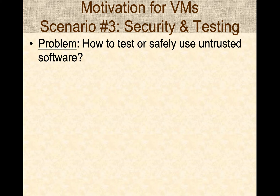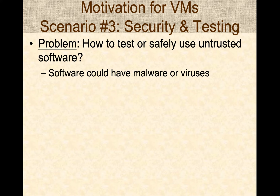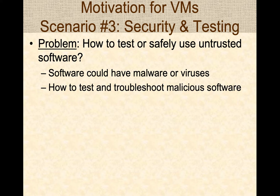The third motivation for using virtual machines is security and testing. The key problem is how to safely use untrusted software — programs you might download from the internet, or software used in high-security infrastructures like power plants or water distribution systems. The question is how to safely test complex software and operating systems for use in mission-critical infrastructure. Software downloaded from the internet could contain malware or viruses, so how do you test and reverse-engineer malicious software to protect your organization from it? Virtual machines come in handy here.